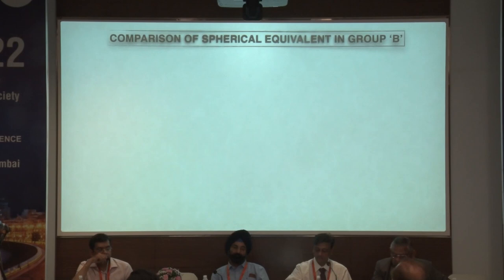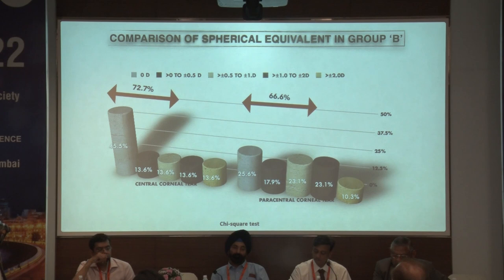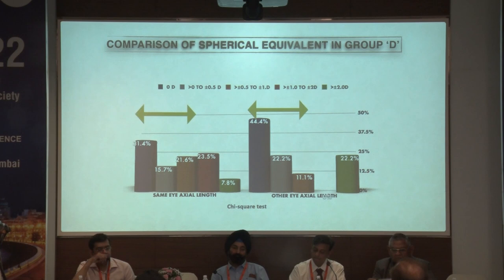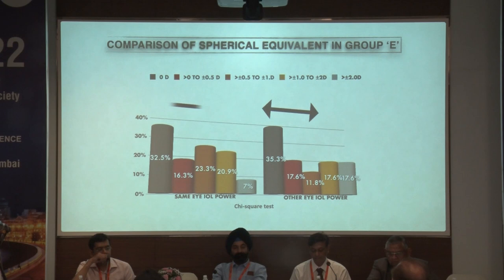In group B, 72.7% of patients with central corneal tear achieved less than 1 diopter of MRSE. Considering same eye K-reading, 75.6% of patients got MRSE less than 1 diopter, while the other eye group had 57.8%. Considering other eye axial length, 77.7% of patients got less than 1 diopter of MRSE versus 68.7% in the other group. Considering same eye IOL power, 72.1% of patients achieved less than 1 diopter of MRSE.